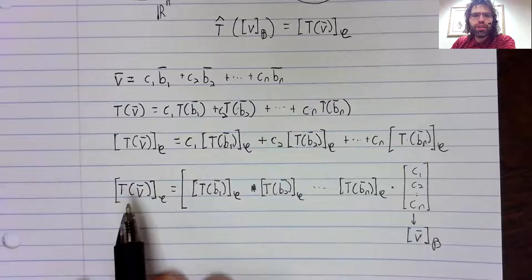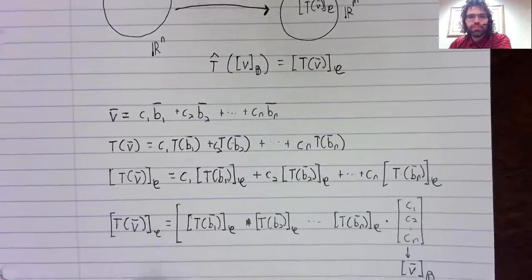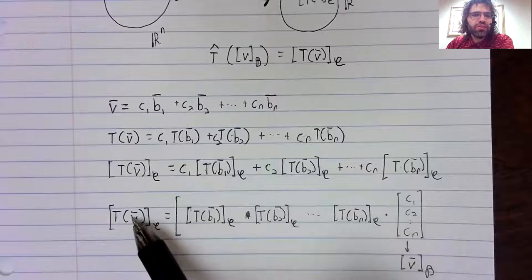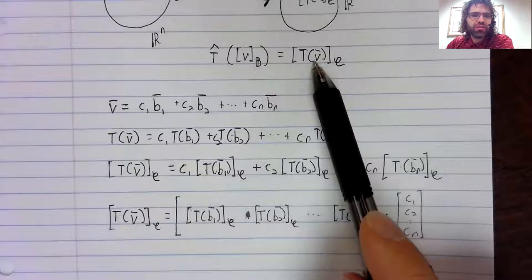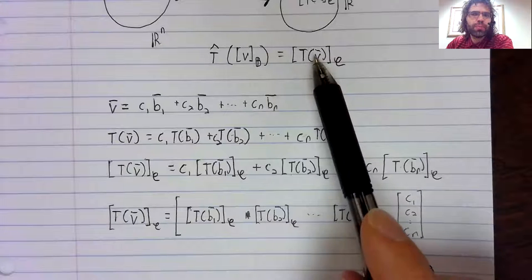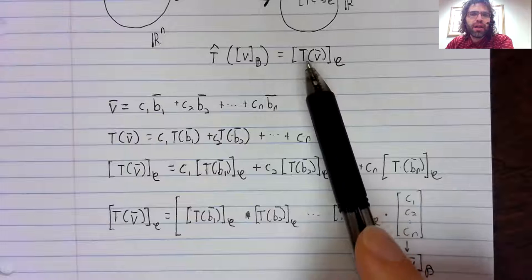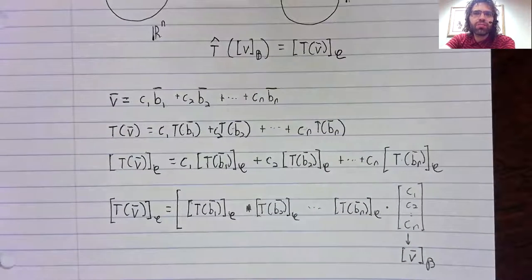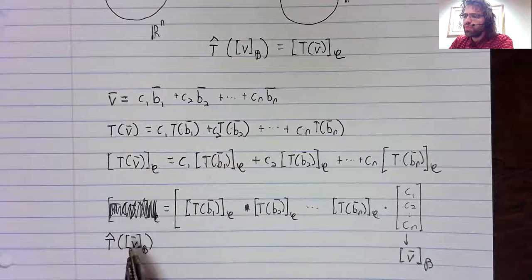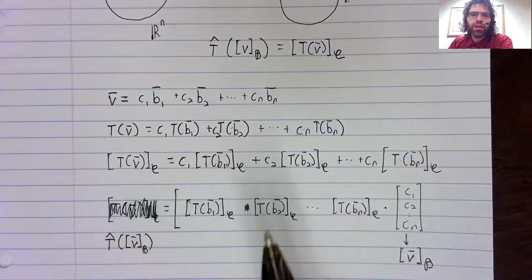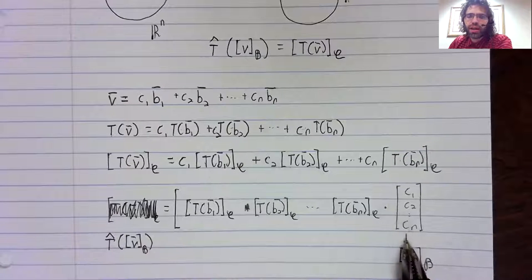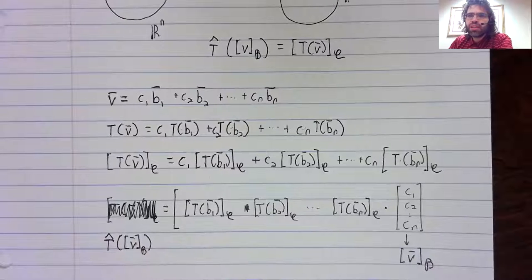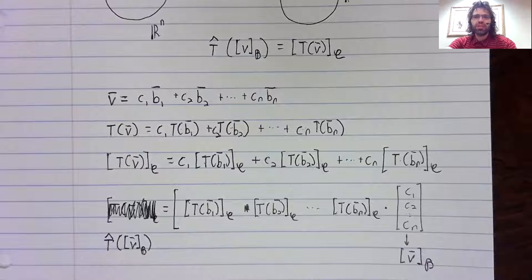Now let's go over here on the left. Let's make it so we can see both these things. This is the same as this, the coordinate vector of T of V with respect to C. And this is the way we've defined T hat. So T hat times this vector is a matrix times this vector. That is linear because matrix multiplication is linear.